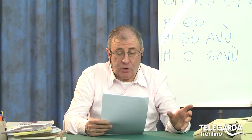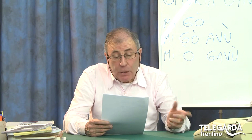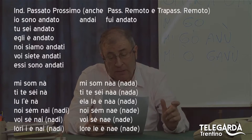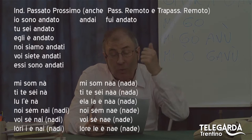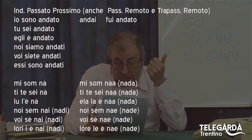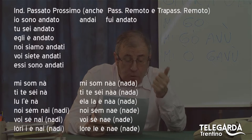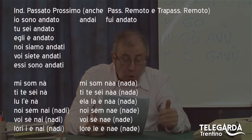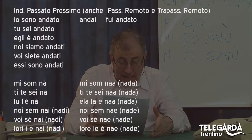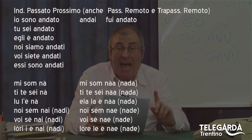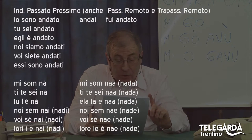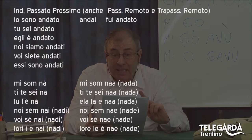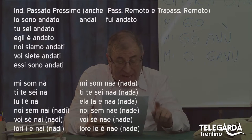Passiamo al passato prossimo. Io sono andato, che corrisponde anche a io andai (passato remoto) e fui andato (trapassato remoto). Tra questi tre tempi c'è un'unica forma in dialetto, che è 'mi som na'. Ti te sei na, lul è na, noi sem nai — attenzione, si dice anche noi sem nadi — voi se nai.